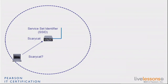The SSID is the name of the network, and along with the SSID you will have all sorts of characteristics to that network, such as security, QoS, isolation, etc. This is why most of the time this network is called a WLAN — a wireless LAN — that contains, among other things, an SSID, which is a string, a name that identifies that network.